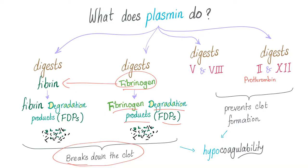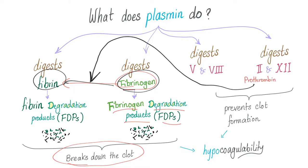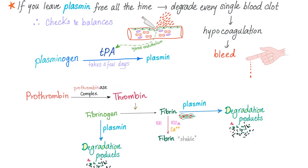Why digest prothrombin? Because if you leave prothrombin to be activated into thrombin thanks to the prothrombinase complex, it's going to convert fibrinogen into fibrin — not good. Plasmin has to prevent new clot formation as well as break down the current clot. All of its actions can be summarized in one word: hypocoagulability. If you leave plasmin free all the time, it will degrade every single blood clot, leading to hypocoagulability until you bleed.